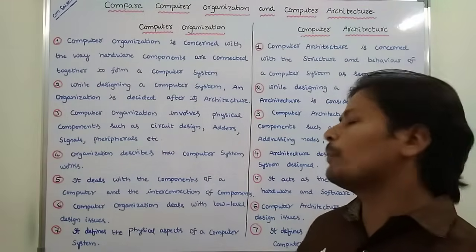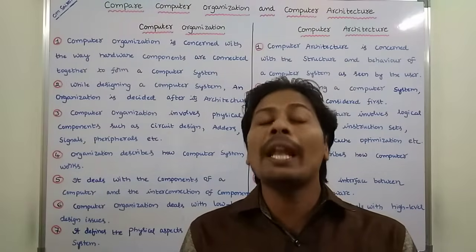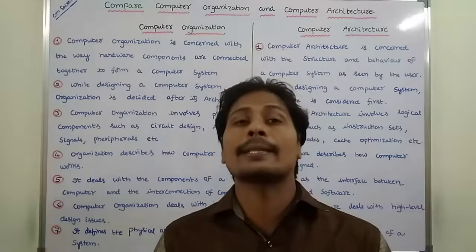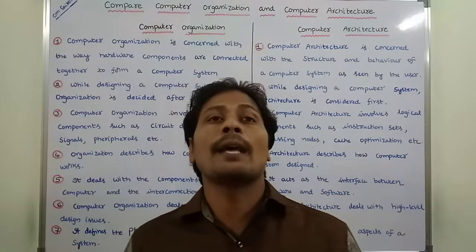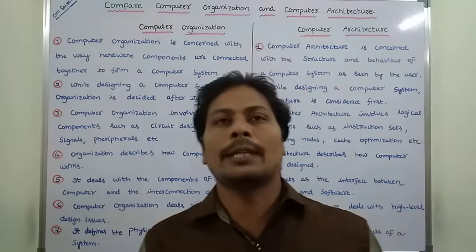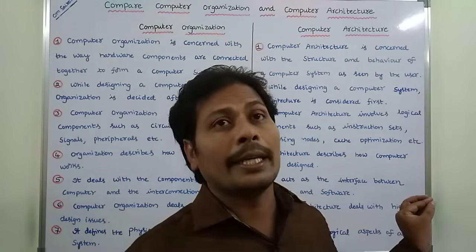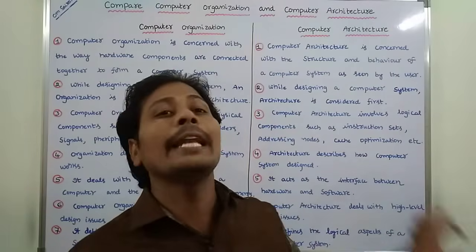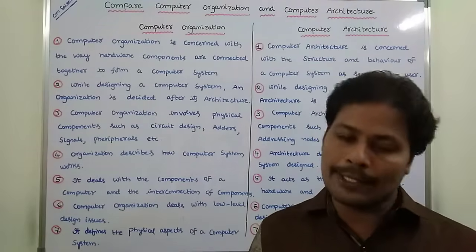Sixth point: Computer Organization describes only low-level design issues — what low-level design issues occur. Whereas, Computer Architecture describes high-level design issues. Because Computer Architecture is considered while designing a Computer System, it describes the high-level design issues, whereas Computer Organization deals with low-level design issues.